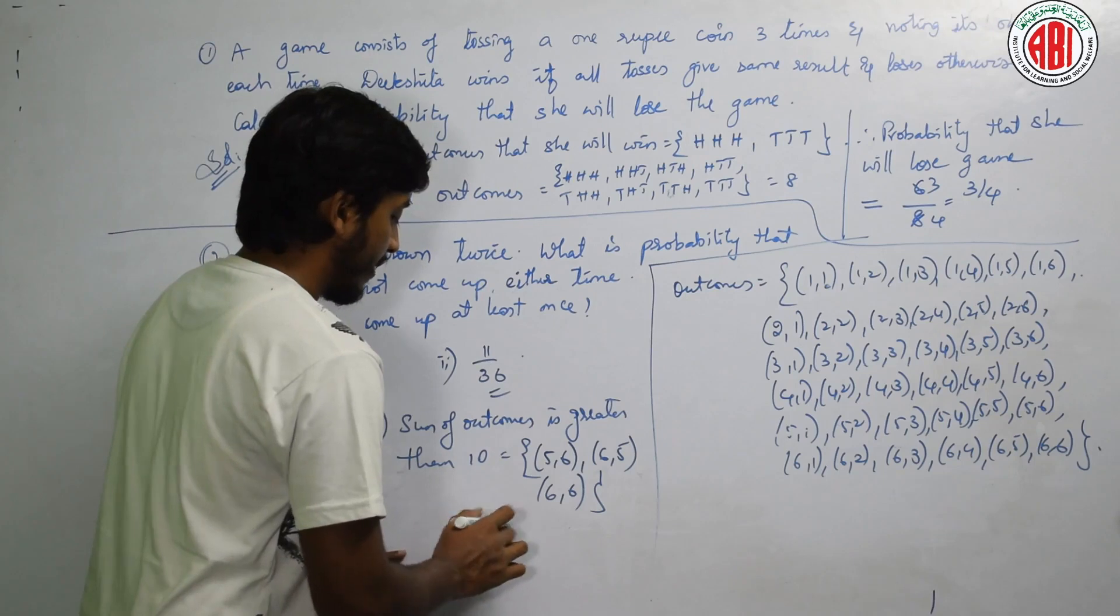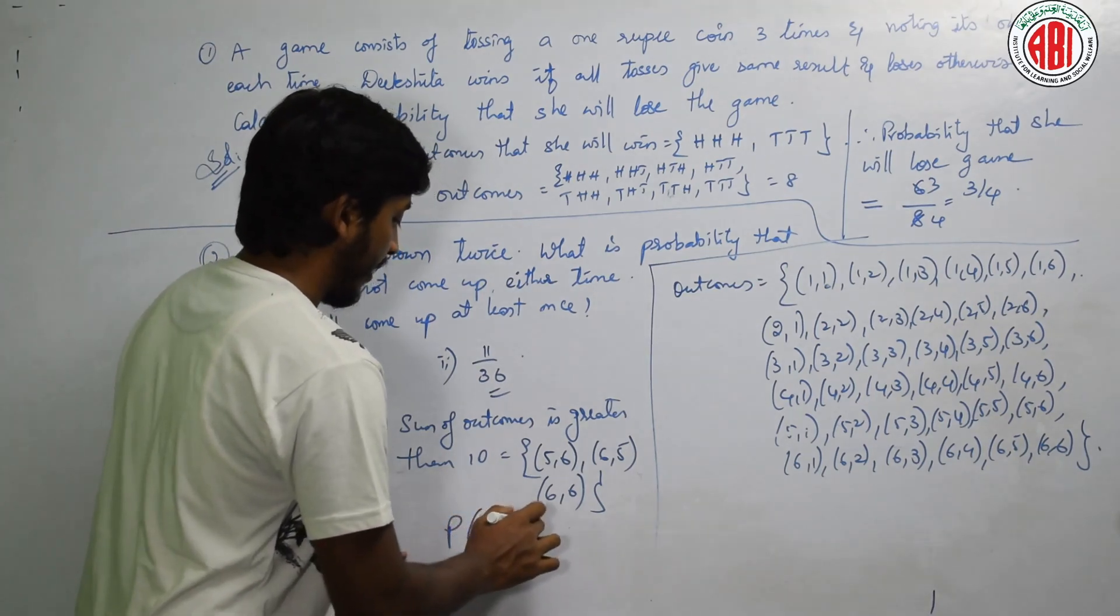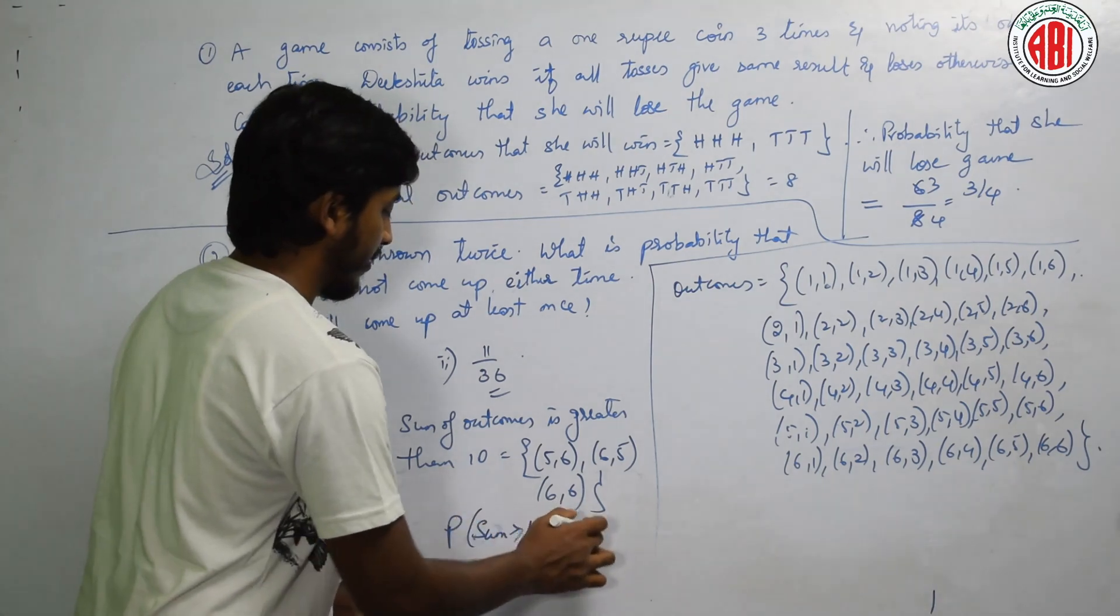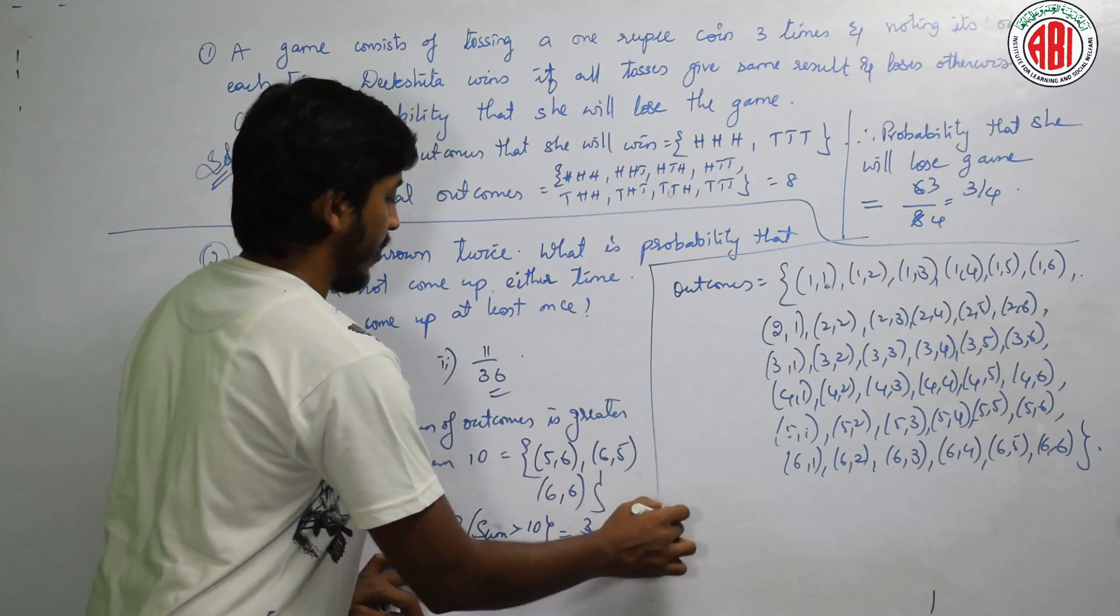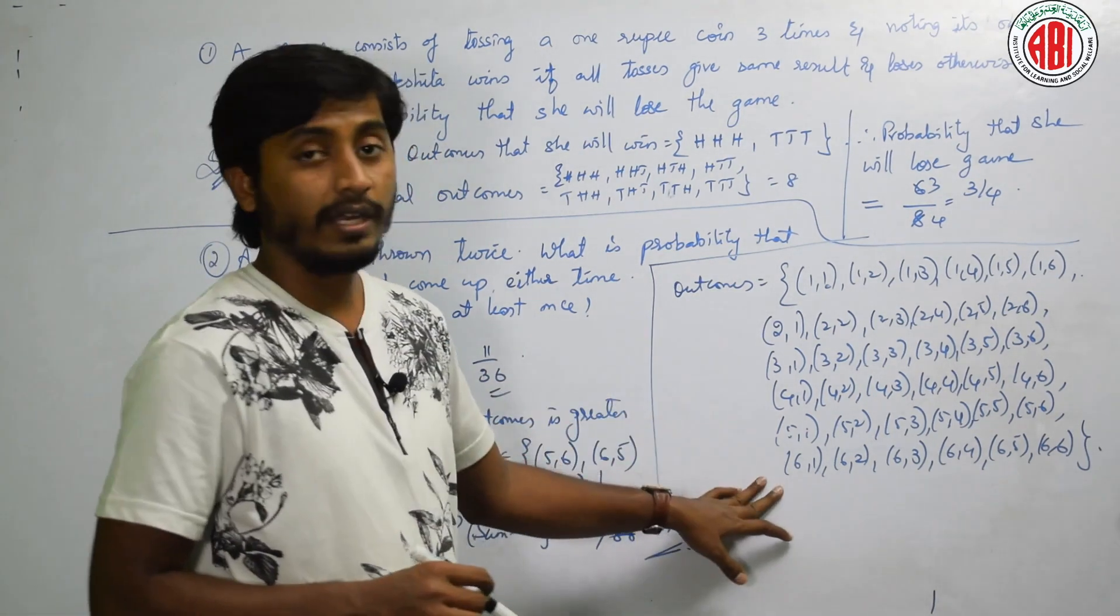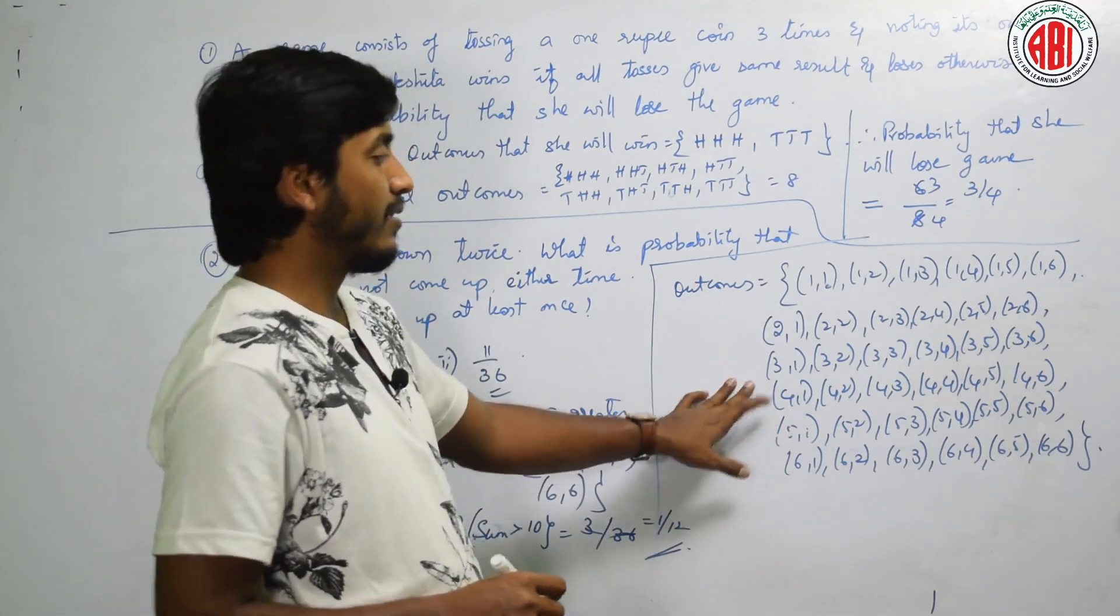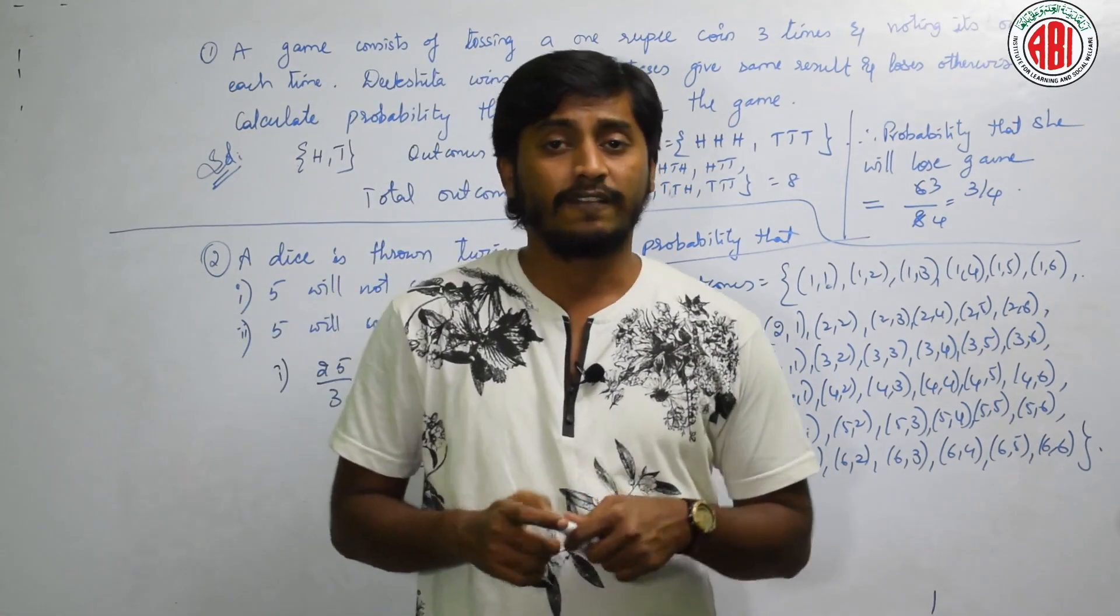Now tell me what is the probability of this? Probability that sum is greater than 10, not equal to, only greater than 10. That is 3 by 36. Answer is 1 by 12. Is it right? Is it okay? Did you understand? On this particular pattern, they may ask you different range of questions. Is it clear?